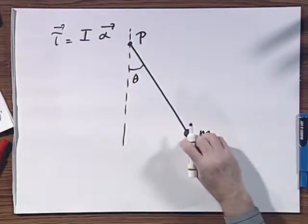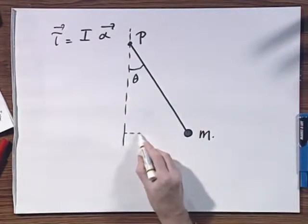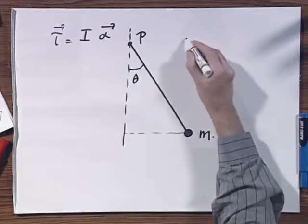If I leave this alone, the system, it's hanging in gravity, this wants to go back in this direction. There is a torque relative to point P.